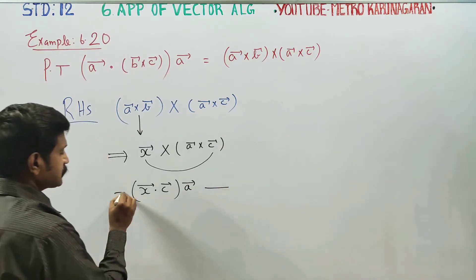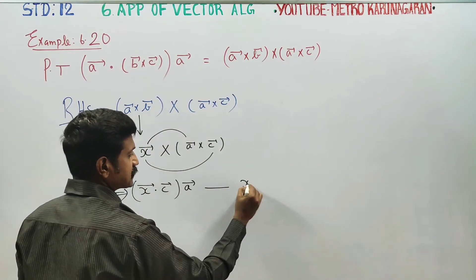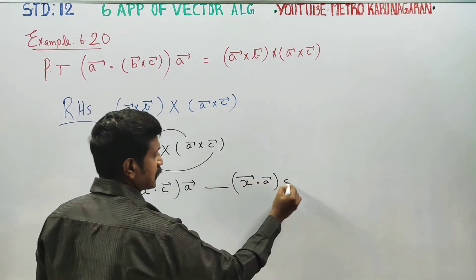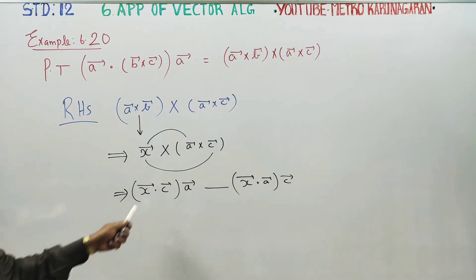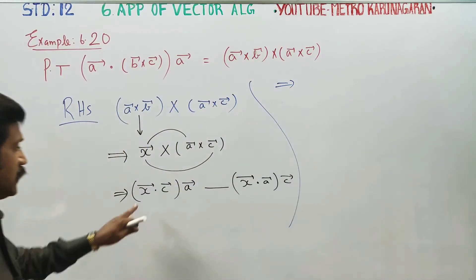Minus outer inner: X vector dot A vector. Balance on the C vector. You can say that X is equal to original. You can substitute it. X vector is original A cross B.